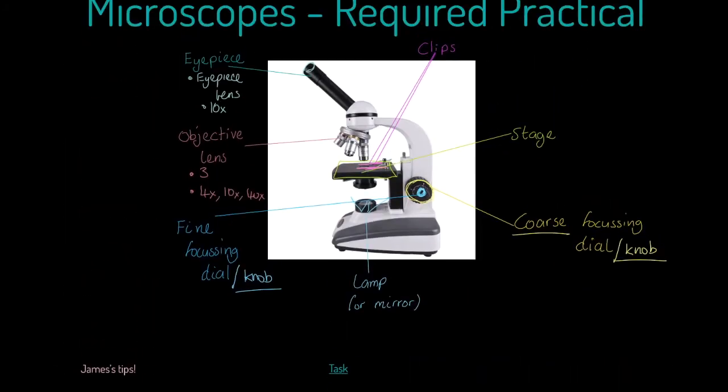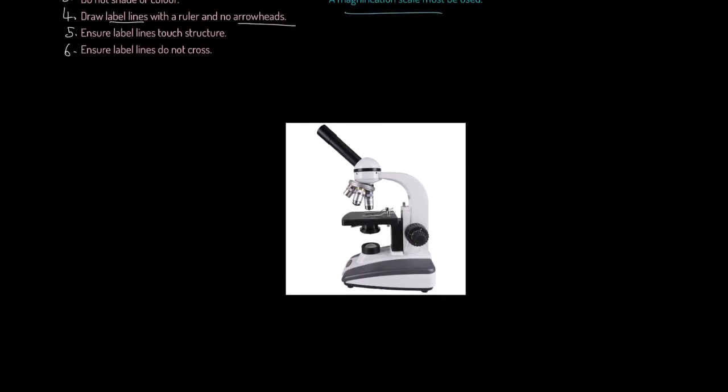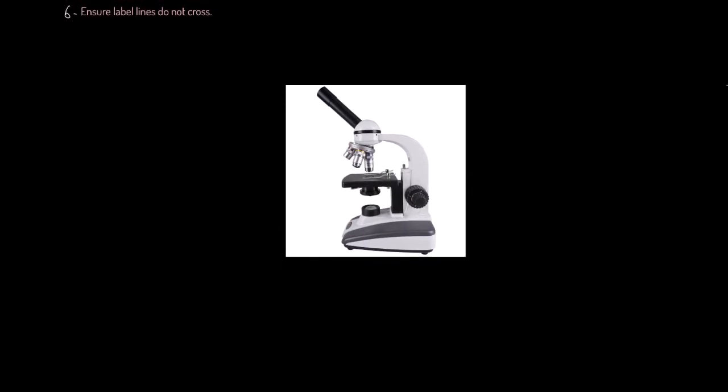And sixthly, ensure that label lines do not cross. I've already broken one of these. I wonder if you know which one it is. But those are the tips we're going to follow. Now, what is the process we are going to follow?